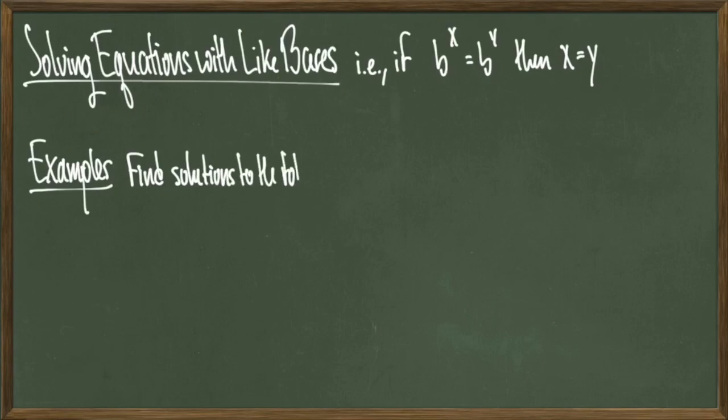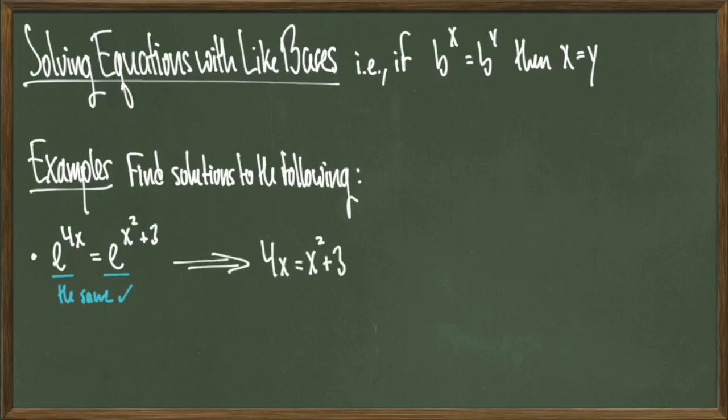As an example, we're going to find the solutions to the following equation: e to the 4x is equal to e to the x squared plus 3. Here, the bases are the same, so we can deduce that 4x is equal to x squared plus 3.